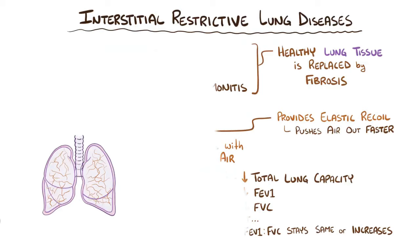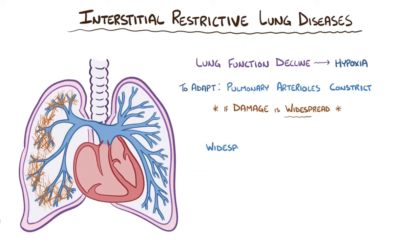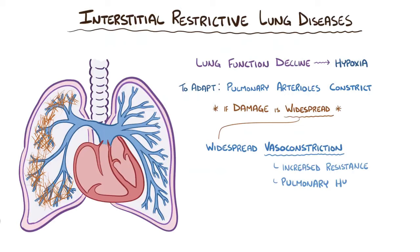Over time, as lung function declines, there can be hypoxia. To adapt, the pulmonary arterioles start to constrict, which effectively shuttles blood away from the most damaged areas of the lung. But if the damage is widespread, then there's widespread vasoconstriction of pulmonary arterioles, and that increases pulmonary vascular resistance in general. Increased resistance increases pressures, called pulmonary hypertension, and that makes it hard for the right ventricle to pump out blood, which can lead to right ventricular hypertrophy — all of which is a process called cor pulmonale.